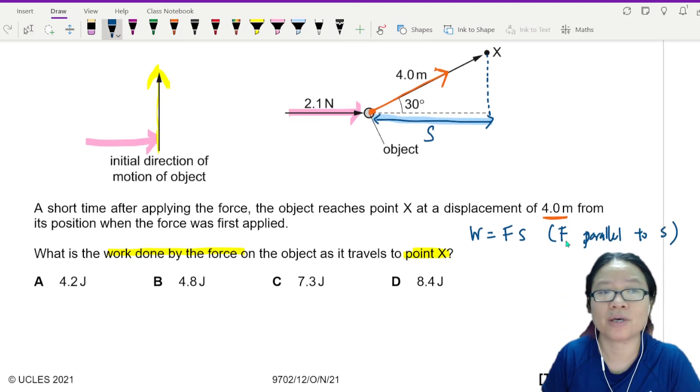Okay, we can use cos. Cos 30 degree is the adjacent side, which is S over the hypotenuse, which is 4. So S will equal to 4 cos 30.